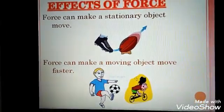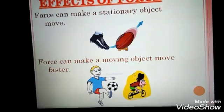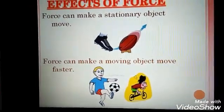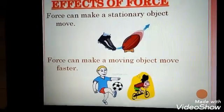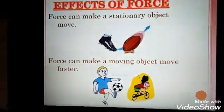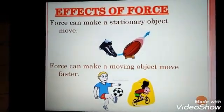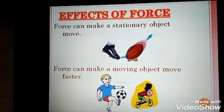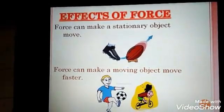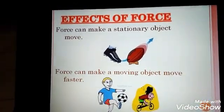Now supposing the body is already moving. When you started applying the force in the same direction, the body started moving faster. It gained speed. So the speed increased. This is the second effect of force that if the object is already moving, when you apply the force from the same direction, the speed increases and the object starts moving faster.